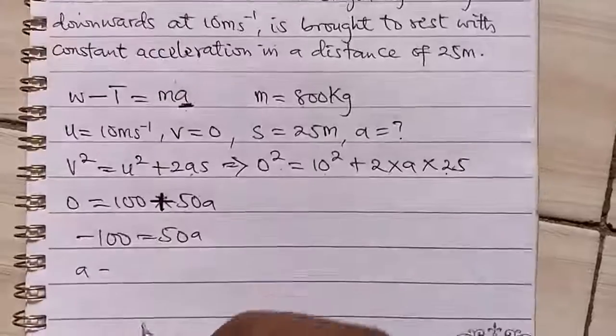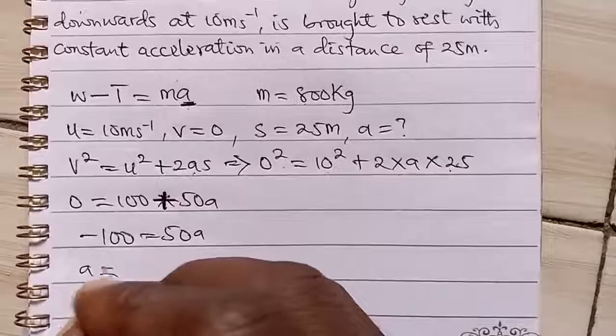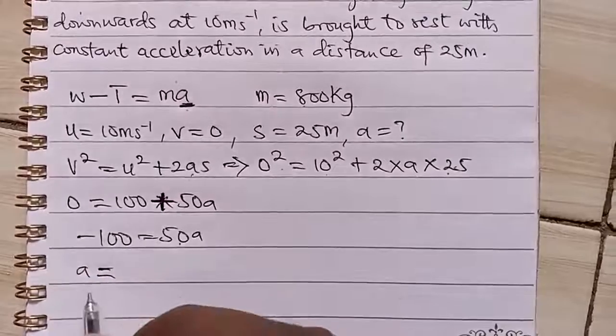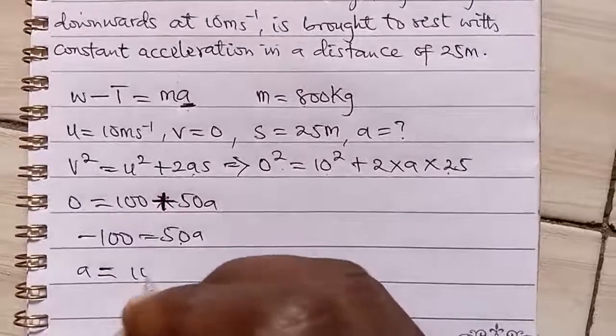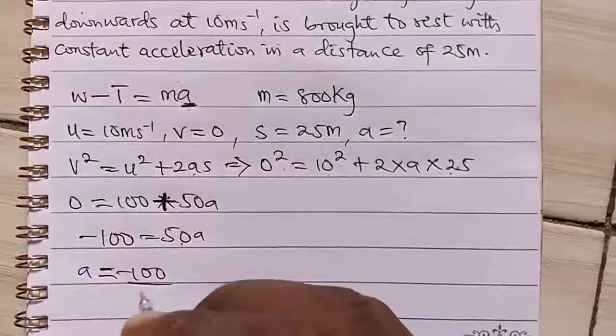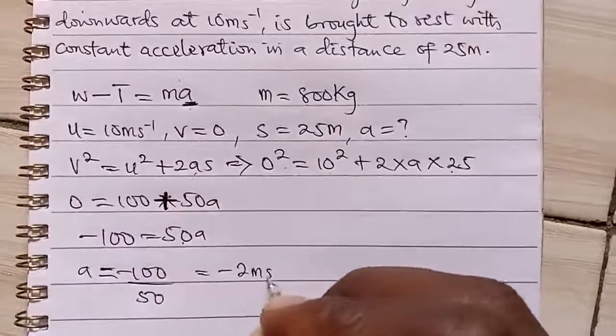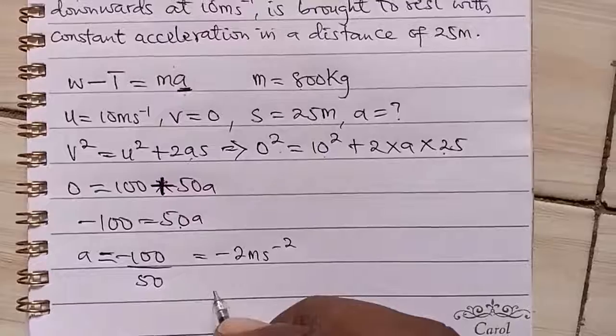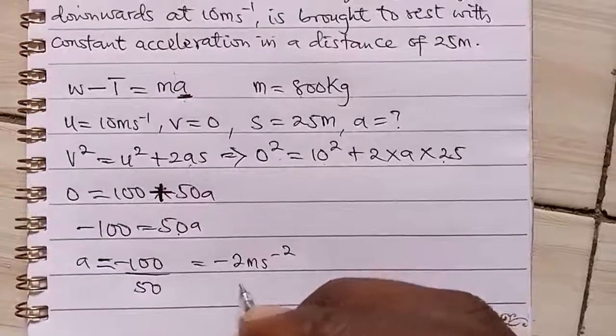Then a becomes 100 divided by 50, which gives us minus 2 meters per second squared as the acceleration. Now that we've gotten the acceleration,